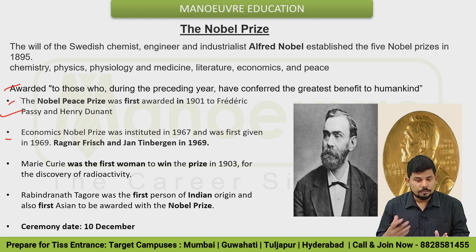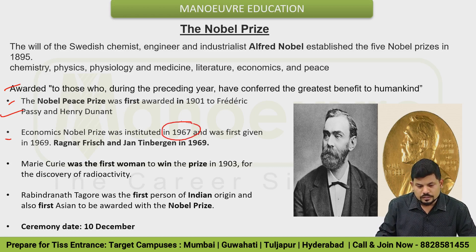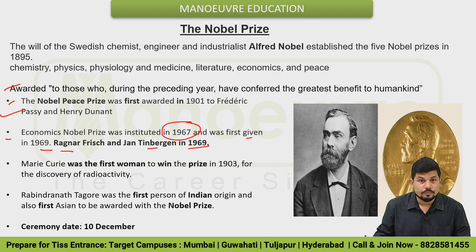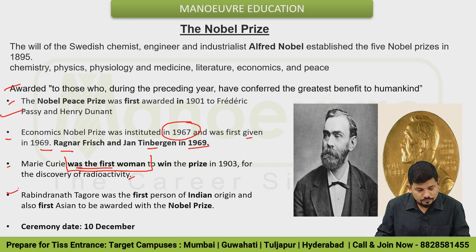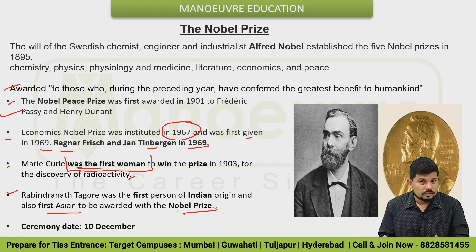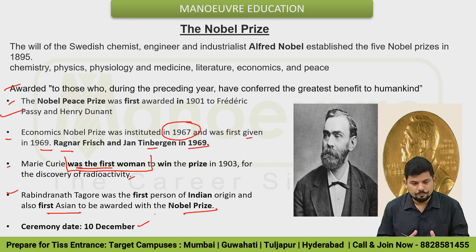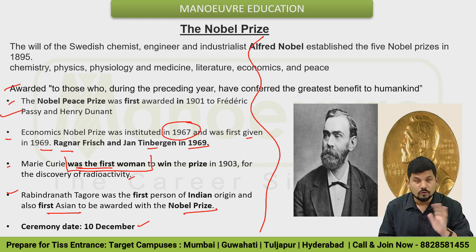Some important static information: Economics Nobel Prize was instituted in 1967 and was first given in 1969 to Ragnar Frisch and Jan Tinbergen. Mary Curie was the first woman to win the Nobel Prize. First-type information — first women, first speaker of Lok Sabha — this first-type question is important. Rabindranath Tagore was the first person of Indian origin and the first Asian to be awarded with the Nobel Prize. The Nobel Prize ceremony date is 10 December — recently distributed on 10 December, with October month announcement. Prepare this static information from your study material as well.